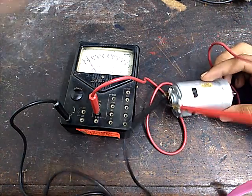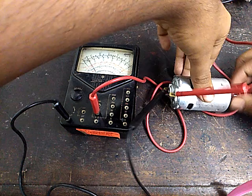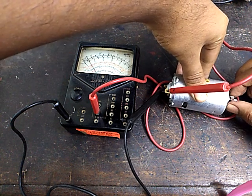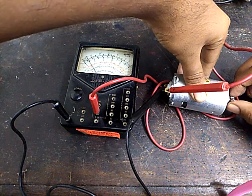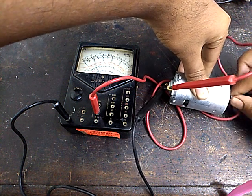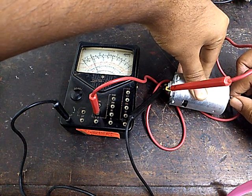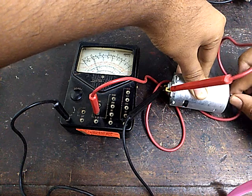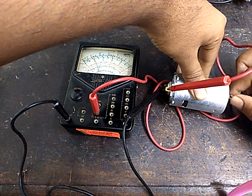Now you can see that if I rotate the shaft of the DC generator, we should get a deflection in the multimeter. Yes, we are getting the deflection. This indicates that the DC generator is in working condition and produces DC voltage.